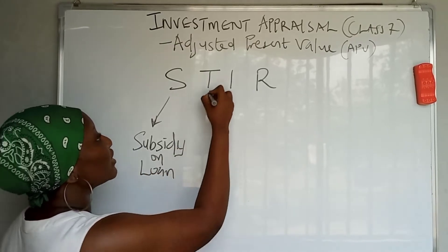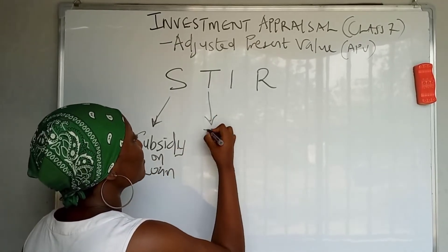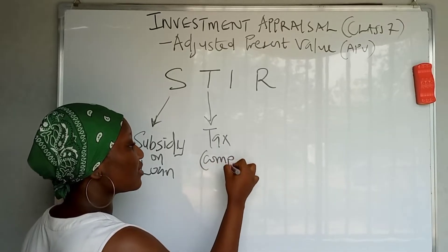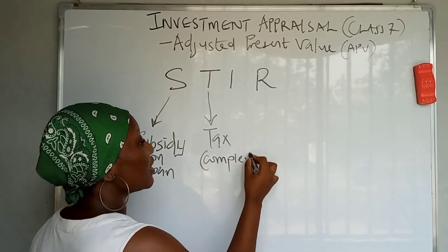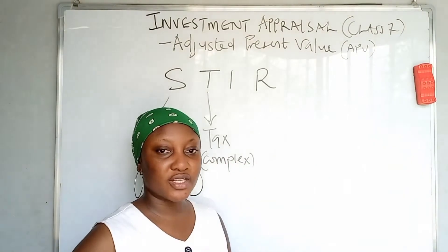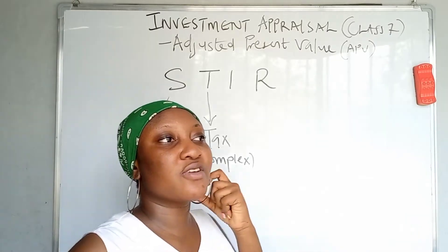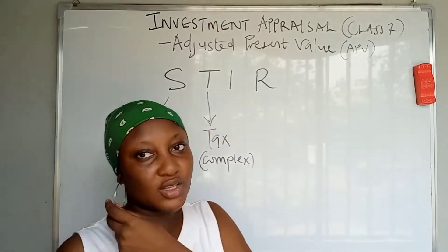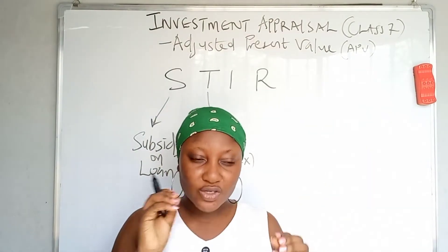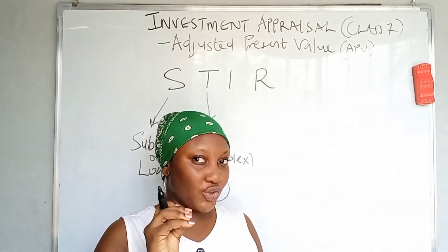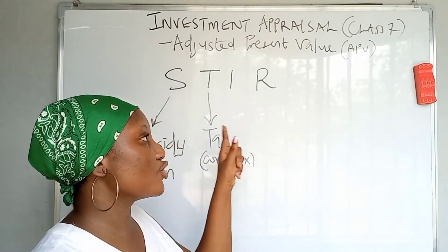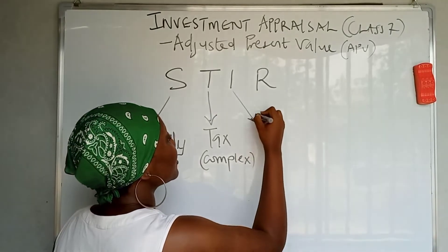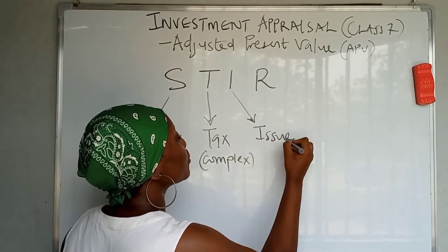The S in STEER stands for Subsidy — when there's a subsidized loan. The T stands for Tax — when there's a complex tax rate. Maybe in year one tax is 30%, in year two it's 25%, in year three it's 40%. When you see all those indications in your question, that's when you know you need to use APV.